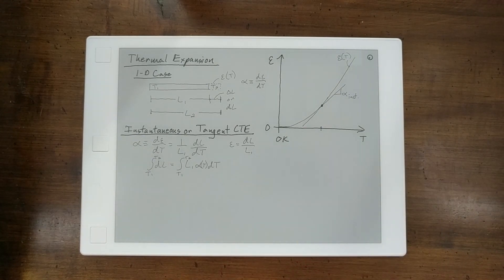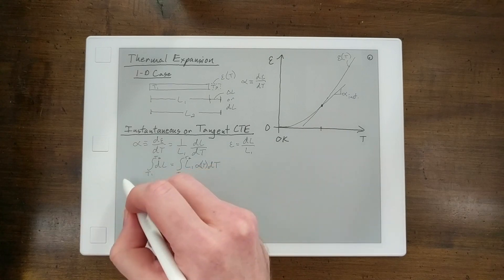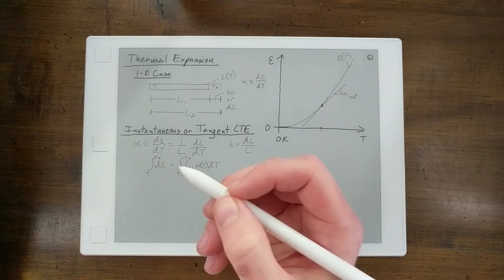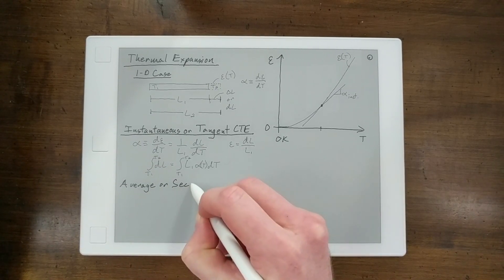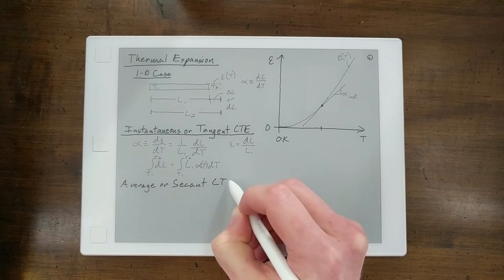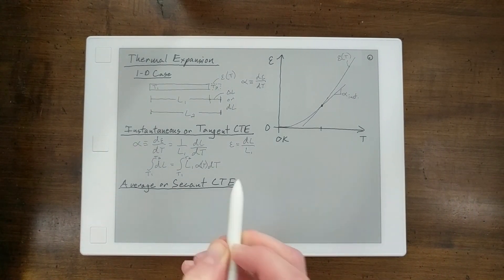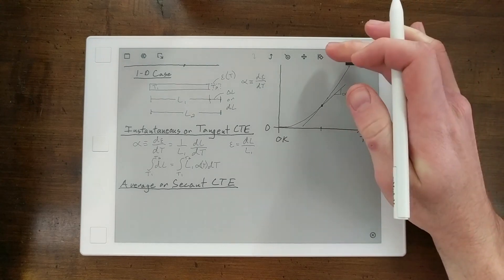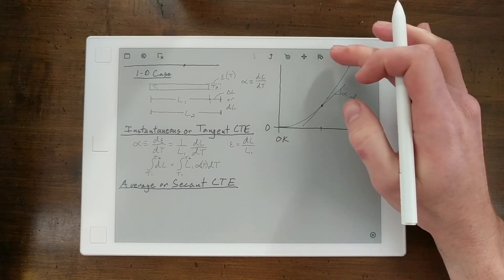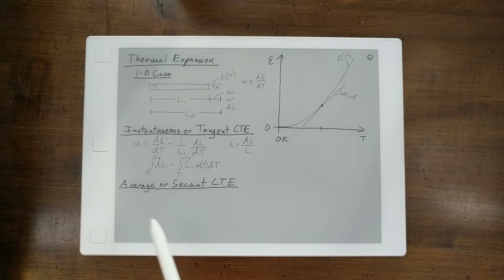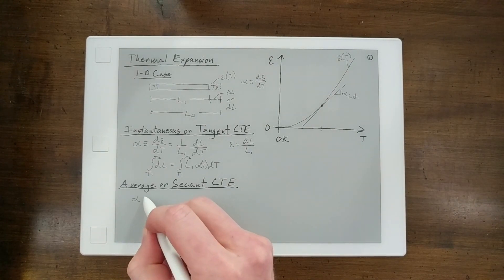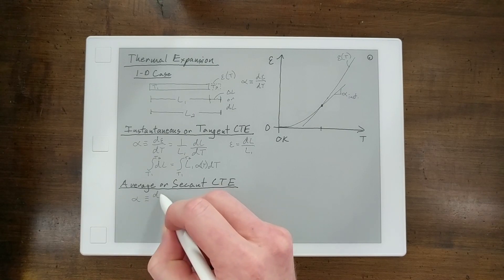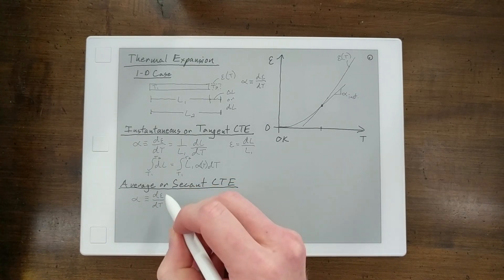And so, what engineers have come up with is the average or secant CTE. Now, this is probably what engineers are most familiar with.